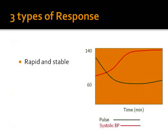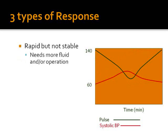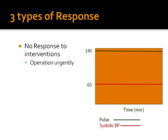There are three types of response after resuscitation. The first is rapid and stable response, where the patient's vital signs stabilize and remain stable. The second type is where the vital signs stabilize but don't stay stable — they deteriorate after some time. In such a patient, the cause could be continued losses, and there is need for more fluids and even blood. In the third type of response, there is no response at all. This is seen in severe shock, like in class 4, and in these cases operation is urgently required.